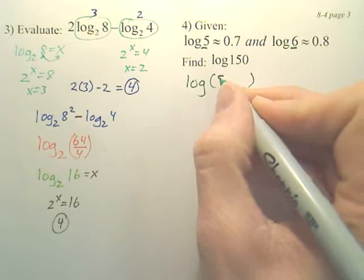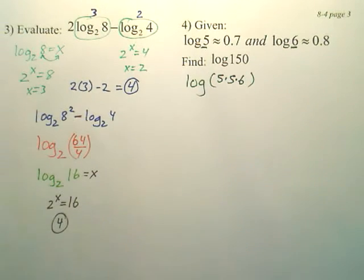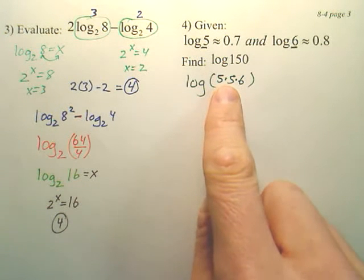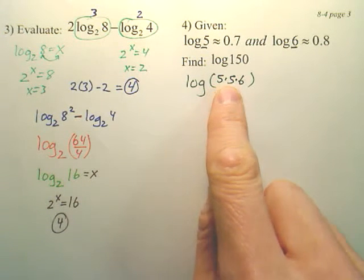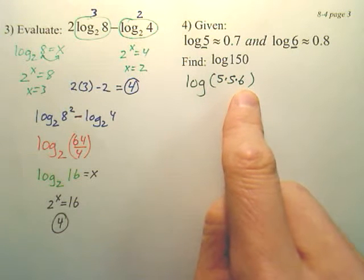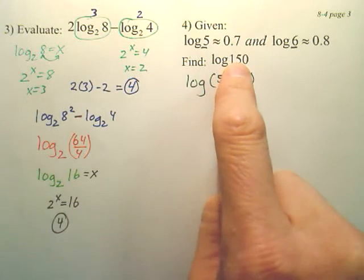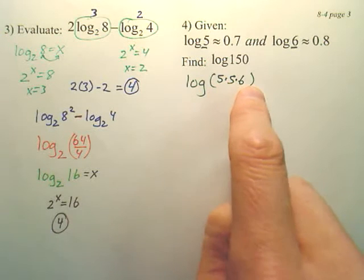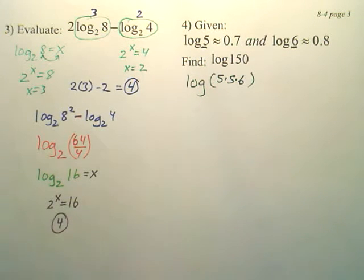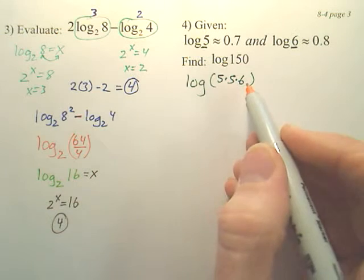What you hopefully would notice is that 5 times 5 is 25. How many 25s make up 150? Six. So 150 is equal to 5 times 5 times 6. Now, can I expand this?